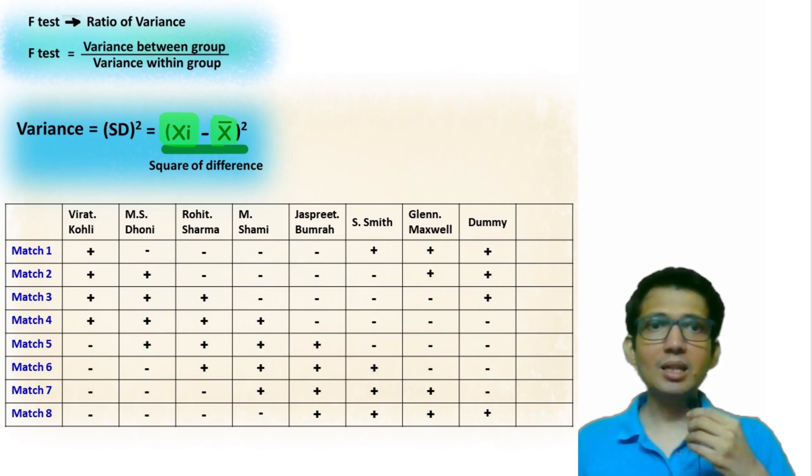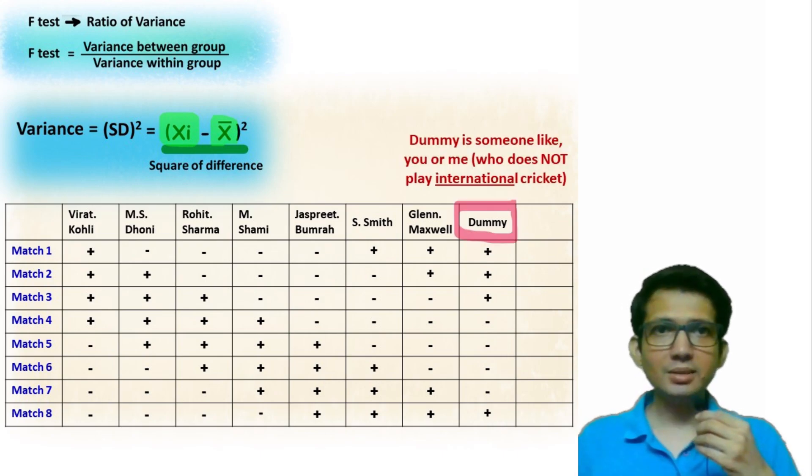Each player is given equal chance for playing. The dummy variable is someone like you and me who would fail to score any runs against all these professional international players.